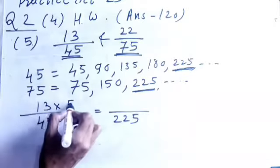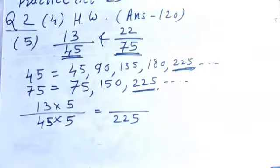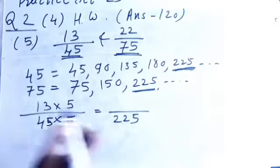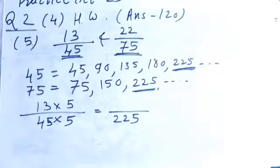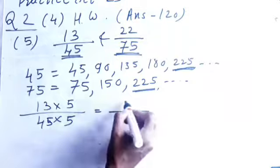Here also I need to multiply with the 5. So, what I did, I want the denominator 225. So, I multiplied 45 with 5. So, here also through the numerator I multiplied with 5 and then 13 fives are 65.